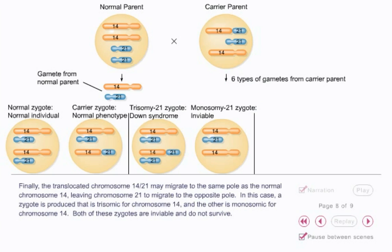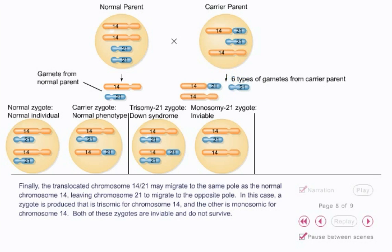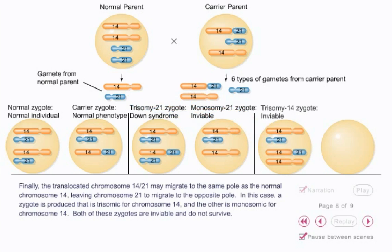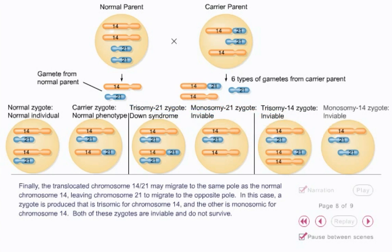Finally, the translocated chromosome 14-21 may migrate to the same pole as the normal chromosome 14, leaving chromosome 21 to migrate to the opposite pole. In this case, a zygote is produced that is trisomic for chromosome 14 and the other is monosomic for chromosome 14. Both of these zygotes are inviable and do not survive.